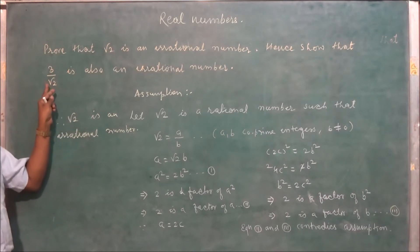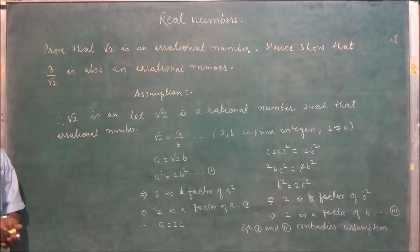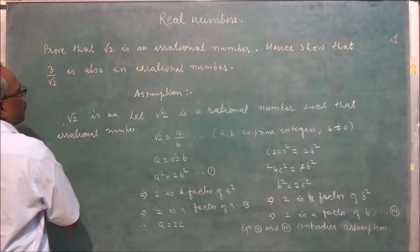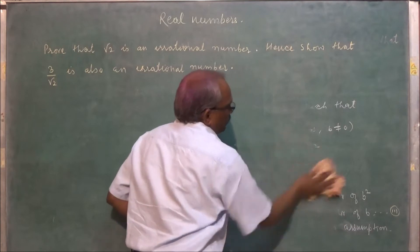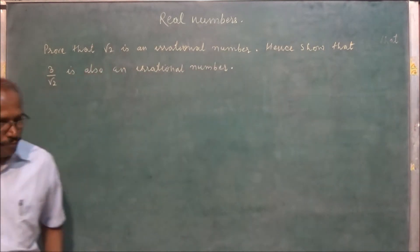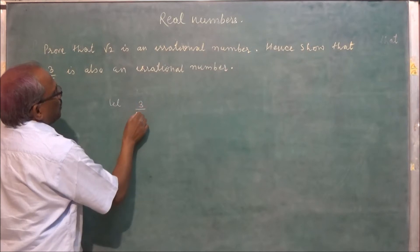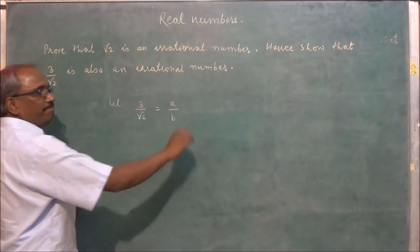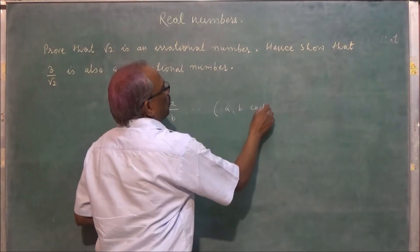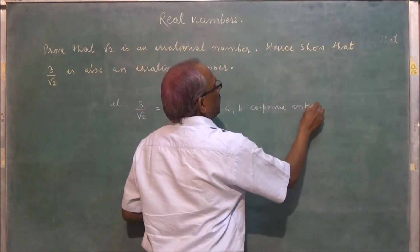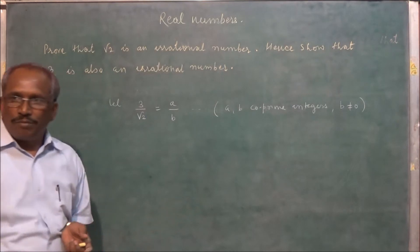Again, one more question: we have to prove that 3 upon root 2 is also an irrational number. Let 3 upon root 2 is equal to a upon b, where a and b are co-prime integers.